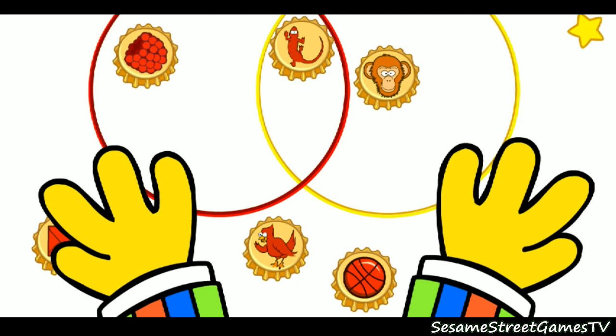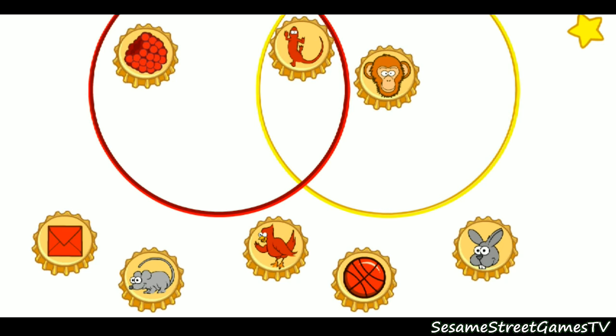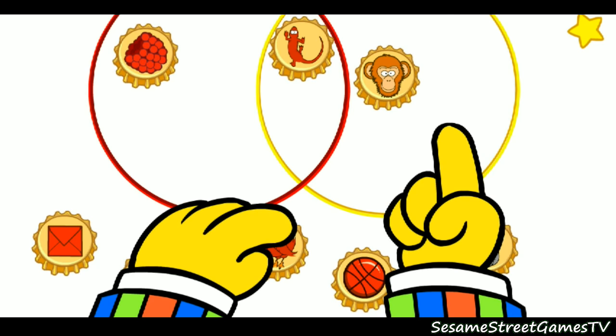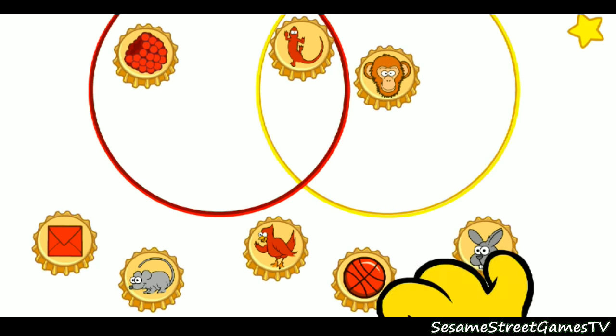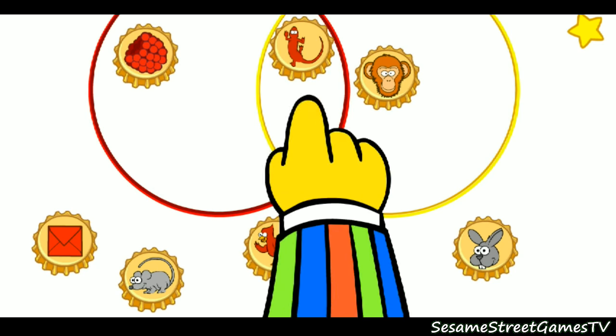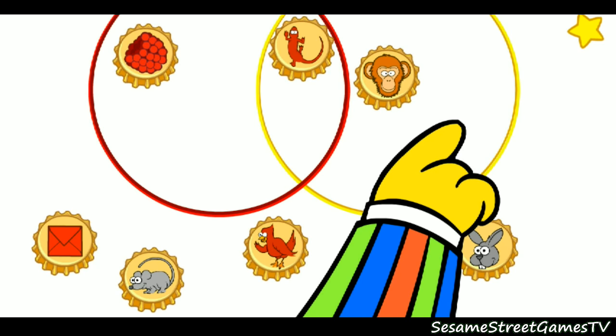Ernie, could you keep your fruit over there next time? Yeah, come on, monkey. Could you help me again? One more time? Thank you. Let's sort the bottle caps this way. Let's put red things here and animals here and red animals here.